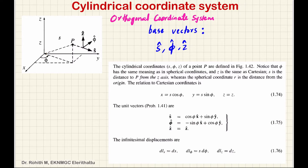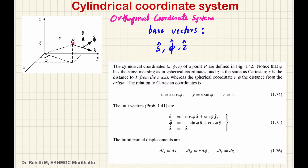First, we consider a Cartesian coordinate system with x, y, z axes. Now, when we compare it, we also have a cylindrical coordinate system. We consider a point P, whose cylindrical coordinates are s, phi, and z.